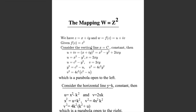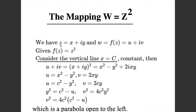Now consider the mapping w = z². Let z = x + iy and w = f(z) = u + iv, where u and v are functions of x and y. Our aim is to find the image of the vertical line x = c using the mapping w = z².